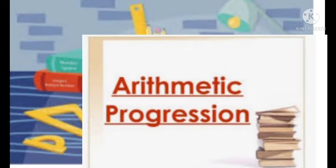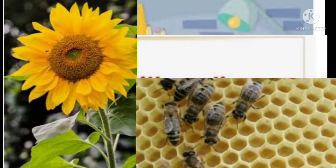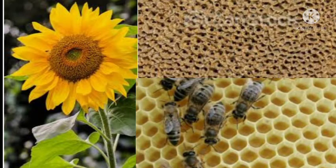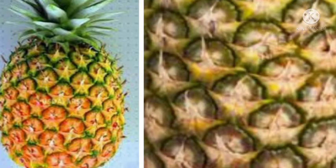Listen children, you must have observed that in nature many things follow a certain pattern, such as the petals of a sunflower, the holes of a honeycomb, the grains on a maize cob, the spirals on a pineapple, etc. We now look for some patterns.